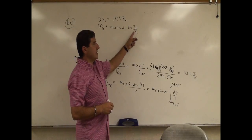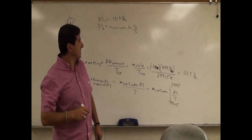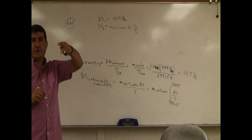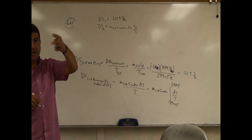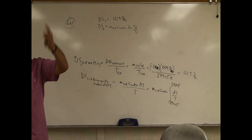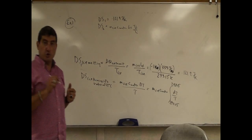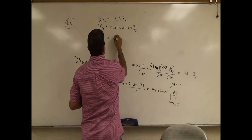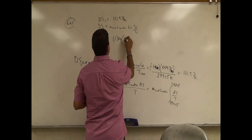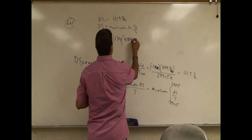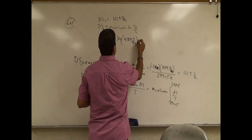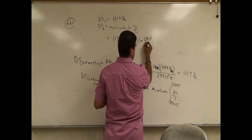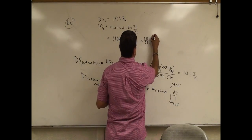Can I keep this in Celsius, or do I have to change to Kelvin? I do have to change to Kelvin, because the ratio of two temperatures in Kelvin is different than the ratio of two temperatures in Celsius. So the mass of the ice is 0.1 kilogram, the specific heat of water is 4,184 joules per kilogram, times ln(298.15 / 273.15).